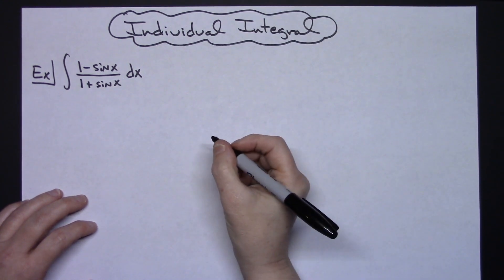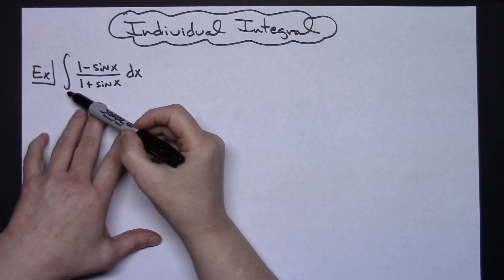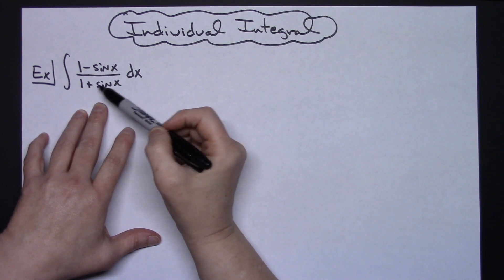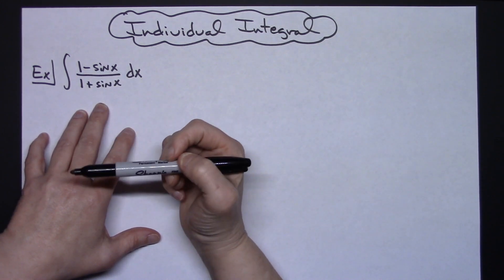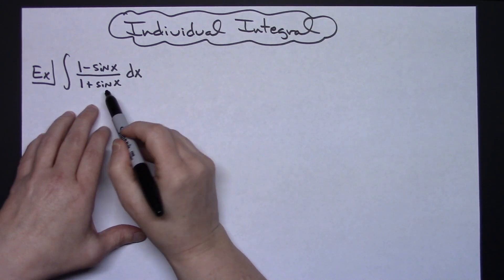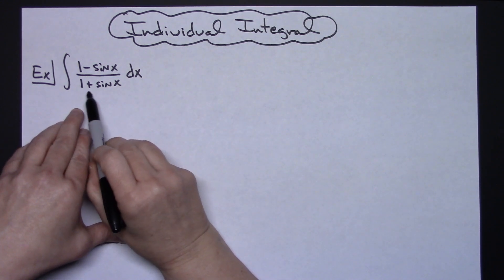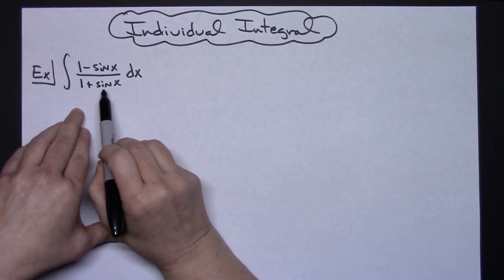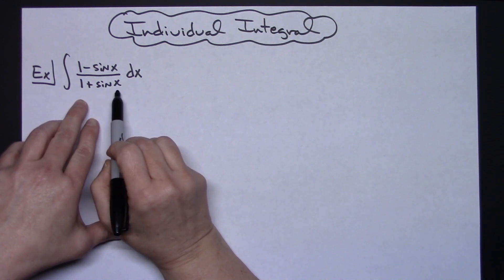In this video I'm going to be working out an individual integral. We're going to take a look at the integral of (1 minus sine x) over (1 plus sine x) dx. To start with, I'm going to look at this denominator — I've got a 1 plus sine x, which is what's creating my problem.